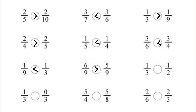In the next question, 1 by 3 and 1 by 2 — numerators are same. So 1 by 3 is smaller than 1 by 2 because if numerators are same, the fraction with the greater denominator has the lesser value. So 1 by 3 is lesser than 1 by 2. In the next question, 1 by 3 and 0 by 3 — the denominators are same. So 1 by 3 is greater than 0 by 3.